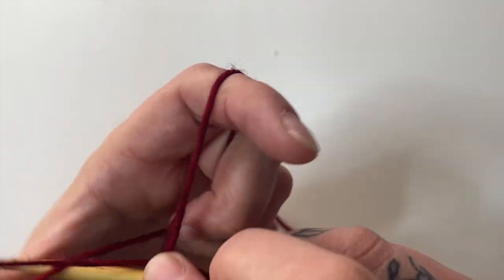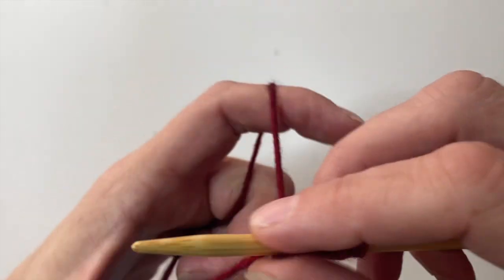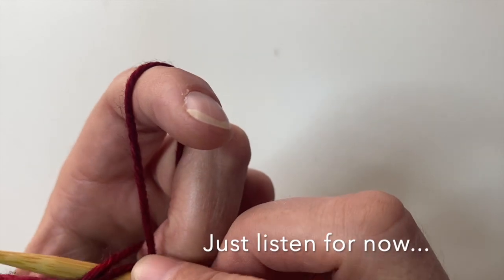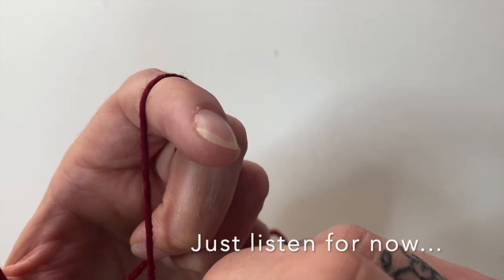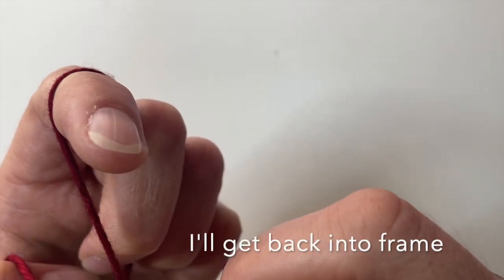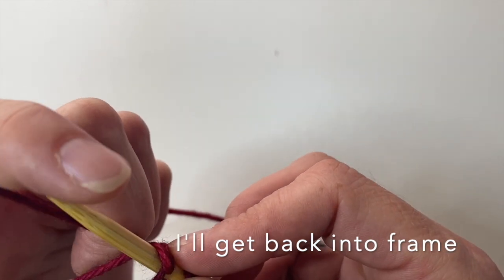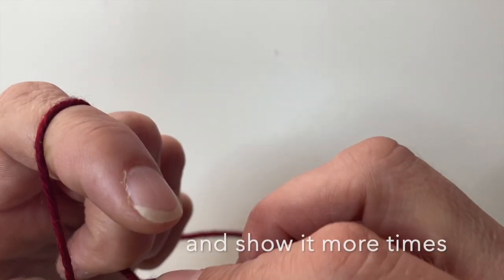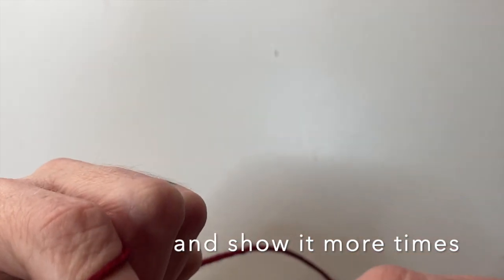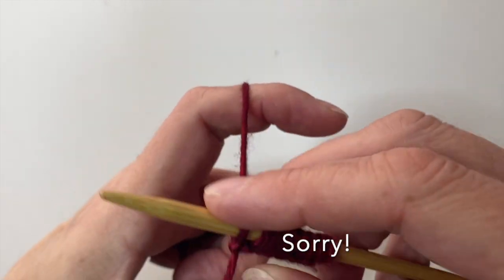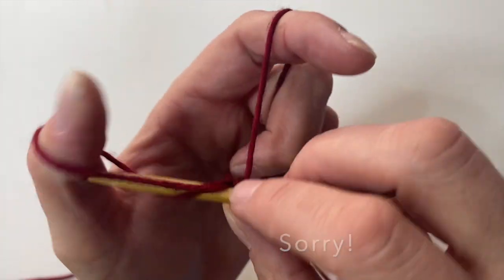I feel like it just makes that opening very easy to find. So come under both strands, come through the hole, bend your thumb, pick up the strand coming off of your index finger, and then bring that through the big opening that's coming off of your thumb. You can't miss it that way, right? It's just right there.